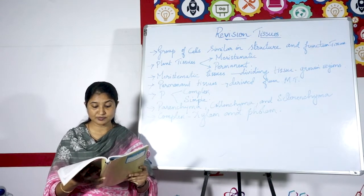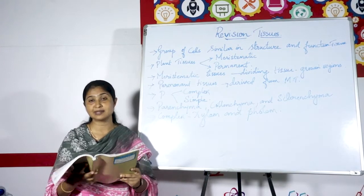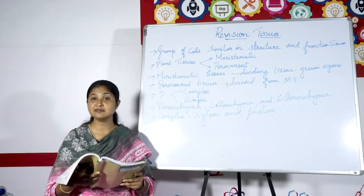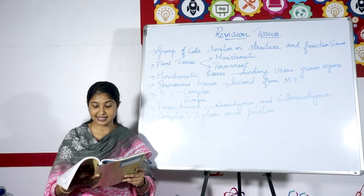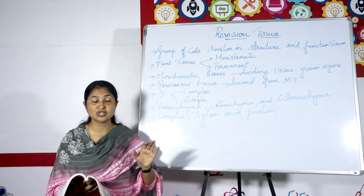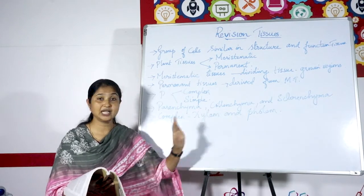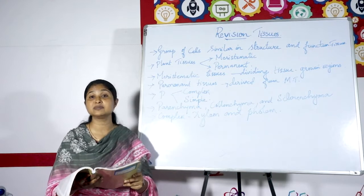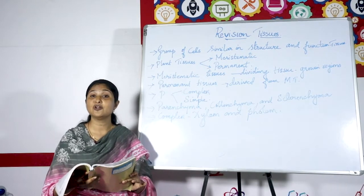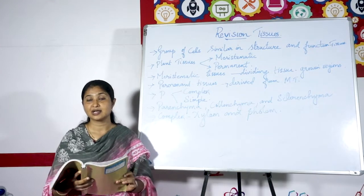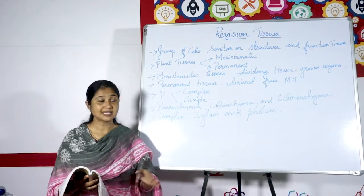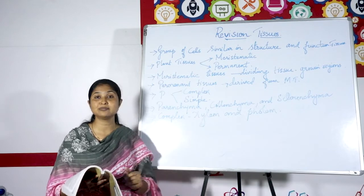Sieve tubes are tubular cells with perforated walls — they have small openings inside their walls. The phloem transports food from the leaves to the other parts of the plant. Except for phloem fibers, all other phloem cells are living cells. Most xylem cells are dead cells, whereas in phloem, the sieve tubes, sieve cells, and companion cells are all living cells. Only the phloem fibers are dead cells. Xylem and phloem together are called conducting tissues, because xylem conducts water and phloem conducts food.